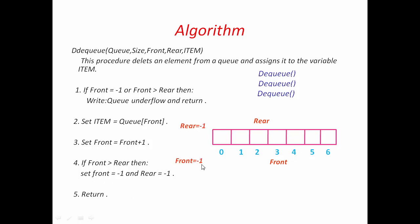One obvious question comes to your mind: why do we write this condition, or what happens if we don't use it here? Let me explain. Now I am going to insert an element — suppose 5. First we increment Rear by 1. New Rear is at index 3, so 5 will be inserted at index 3. Similarly, the next element will be inserted at index 4, and so on. But the problem is we can't use the space to the left side of Front — so that space is wasted. That's why we write this condition: if Front is greater than Rear, we set Front and Rear equal to minus 1, so that we can use the total free space.